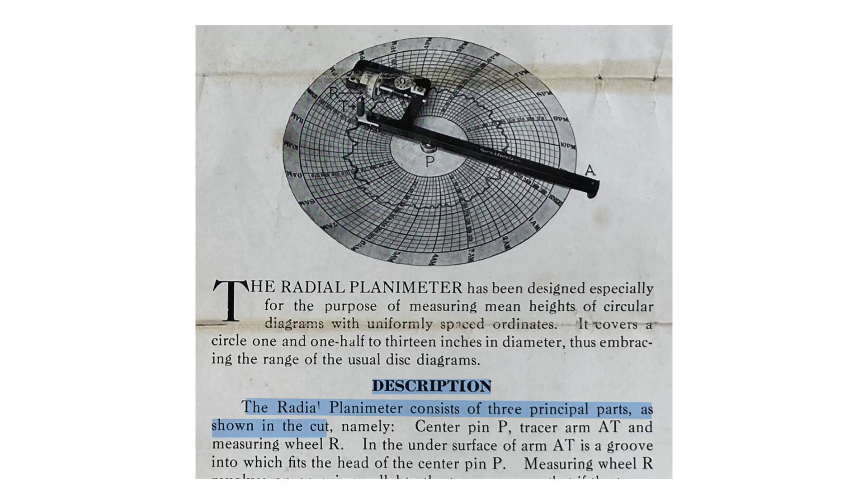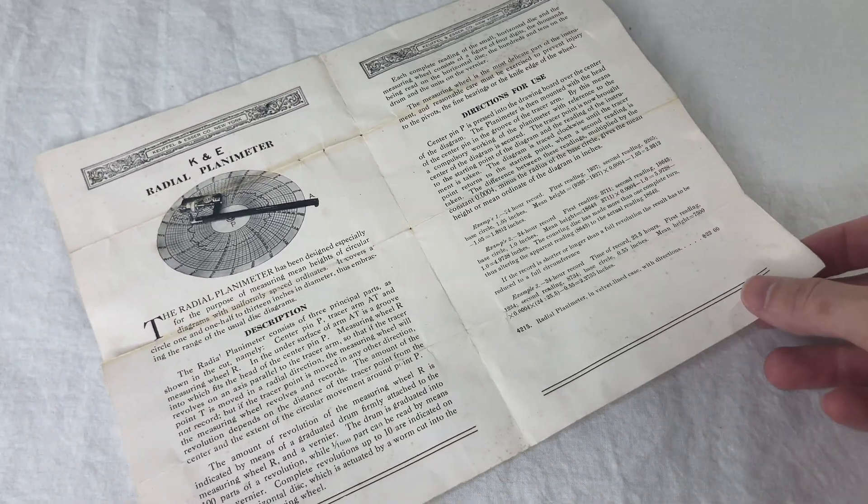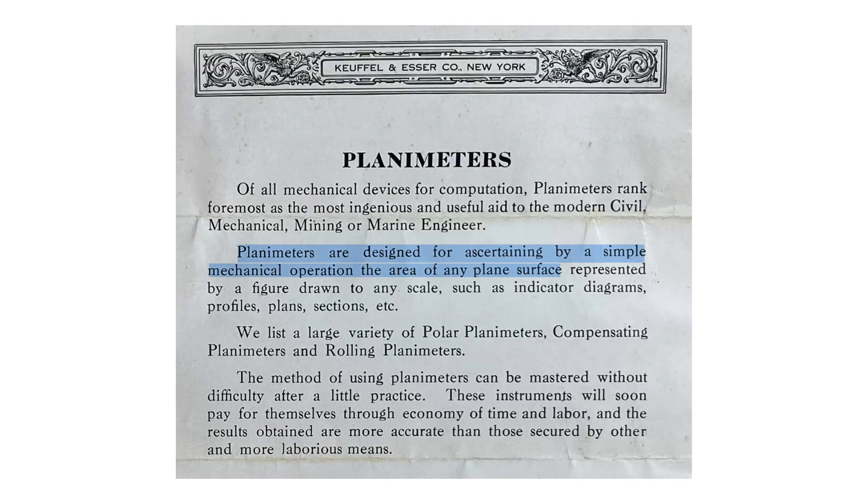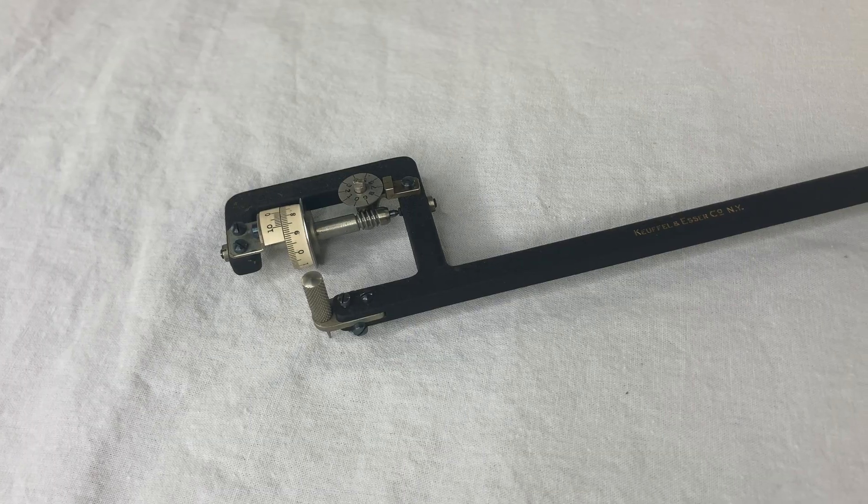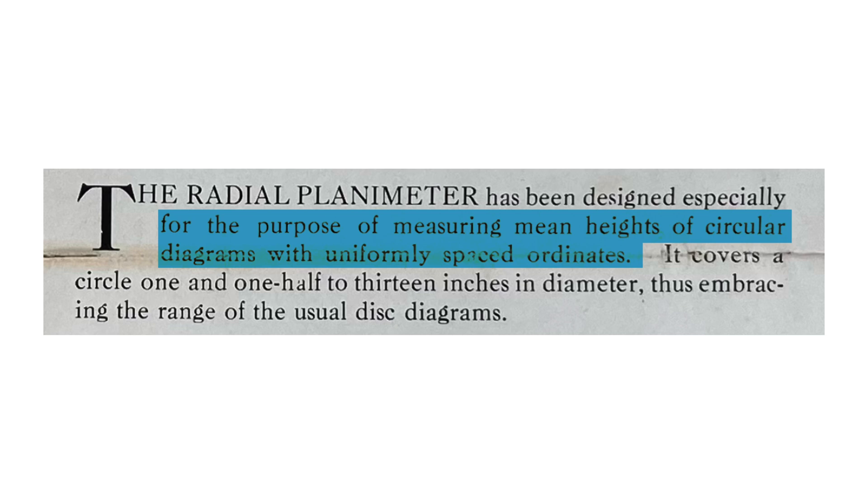The instructions explain it pretty well. The radial planimeter consists of three principal parts as shown in the cut. The cut? I'm glad I had the instructions because this isn't really what I was expecting. A planimeter is for measuring area. Planimeters are designed for ascertaining by a simple mechanical operation the area of any plane surface. Okay so what's so special about the radial planimeter? They say it is designed for the purpose of measuring mean heights of circular diagrams with uniformly spaced ordinates. Eh?